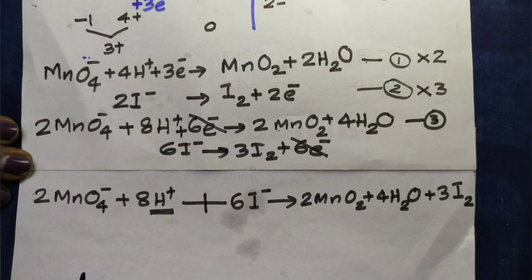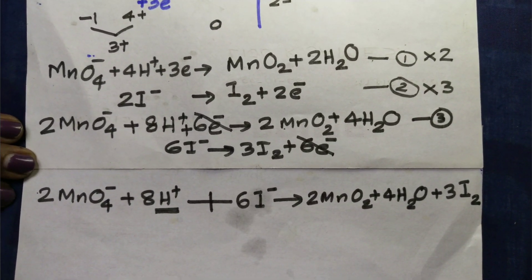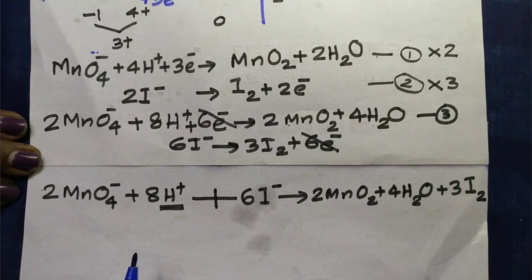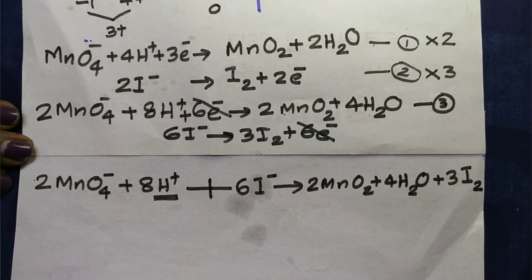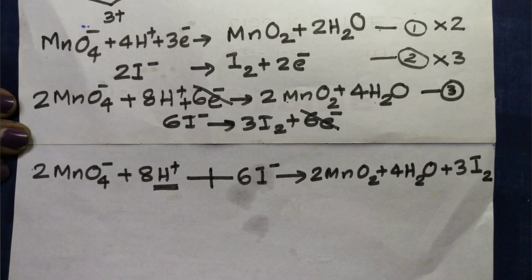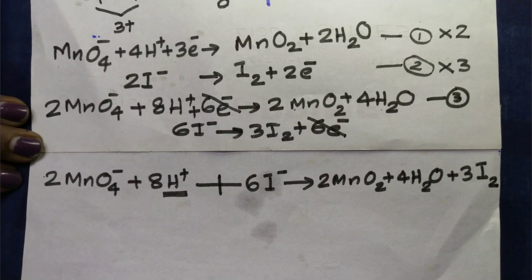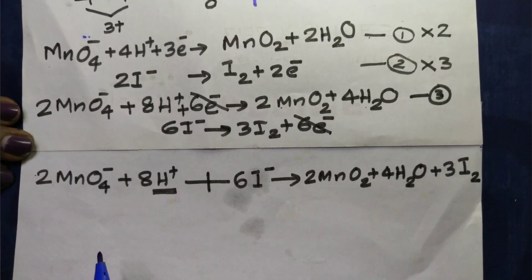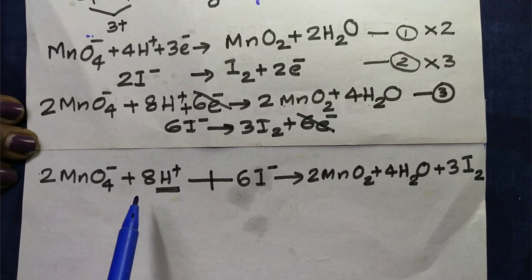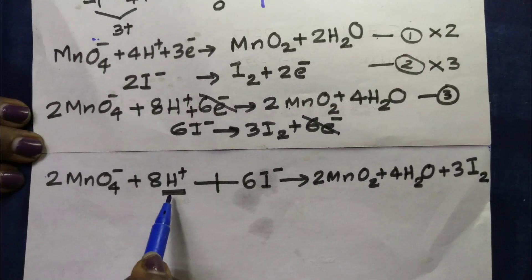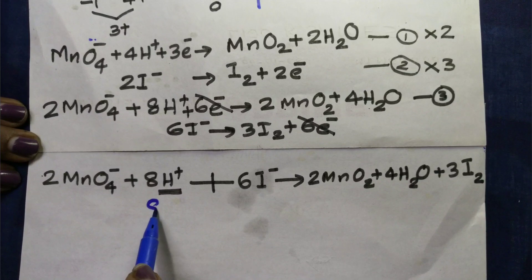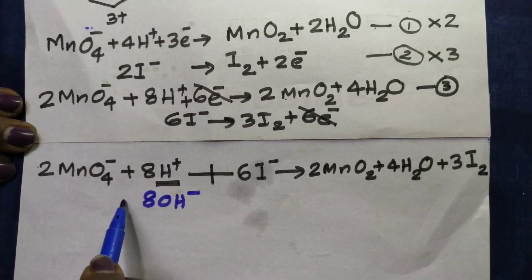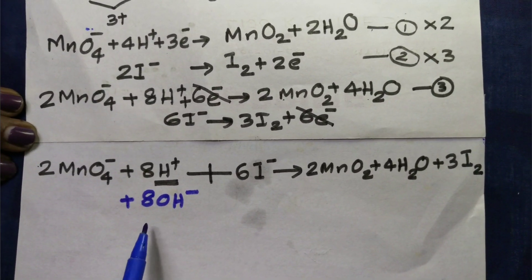Now, if we are doing this — what is acidic medium? This is acidic medium. If we are converting this to basic medium, we will do basic medium. In basic medium, this equation has 8H⁺, and we add 8OH⁻ to both sides.